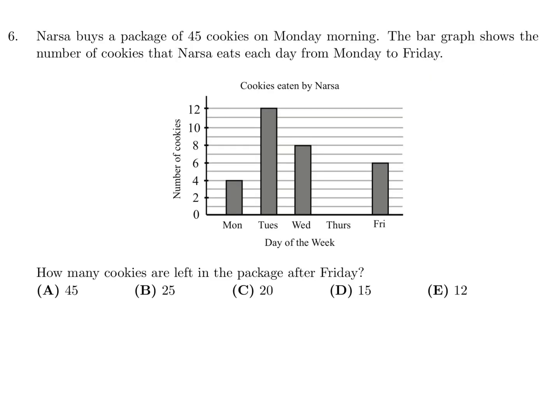Marsa buys a package of 45 cookies on Monday morning. The bar graph shows the number of cookies that Marsa eats each day from Monday to Friday. How many cookies are left in the package after Friday? So it starts off with 45, we're going to subtract from that 45 how many she ate. On Monday she ate 4, Tuesday looks like she ate 12, Wednesday is 8, Thursday there's nothing there so 0, and then Friday looks like 6. So that is 45 minus 20, 30, so that is 15 is how many are remaining. And that would mean number 6 is D.